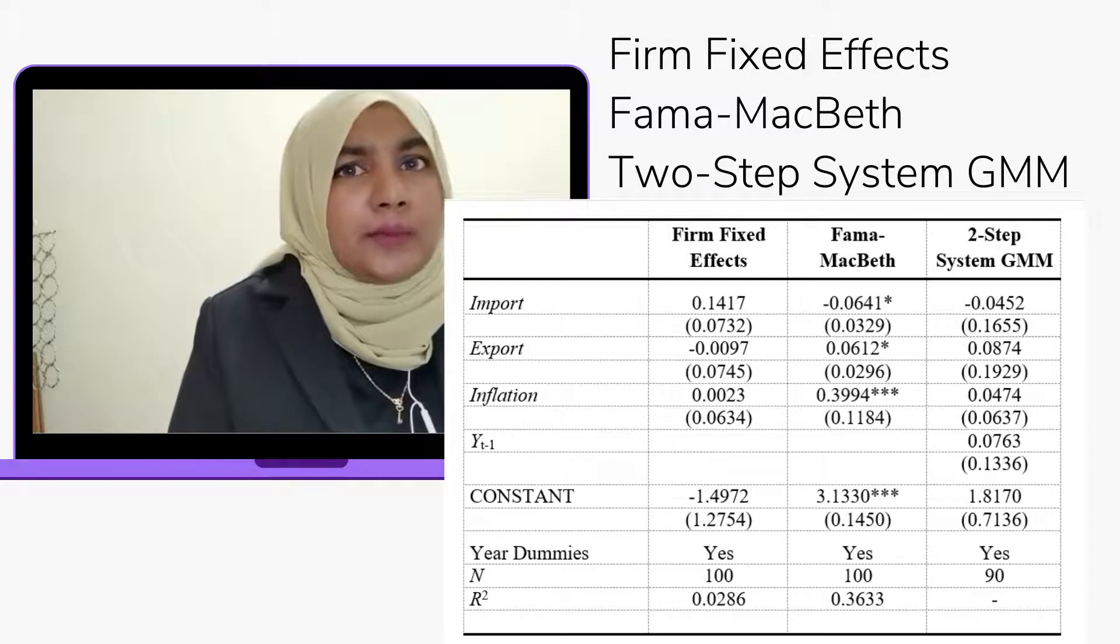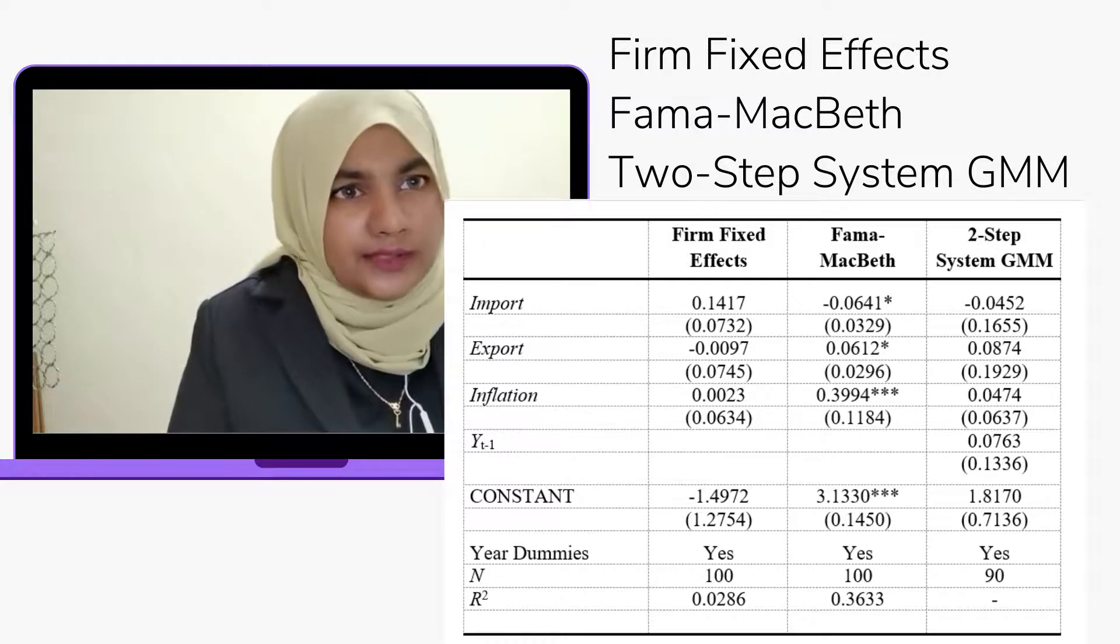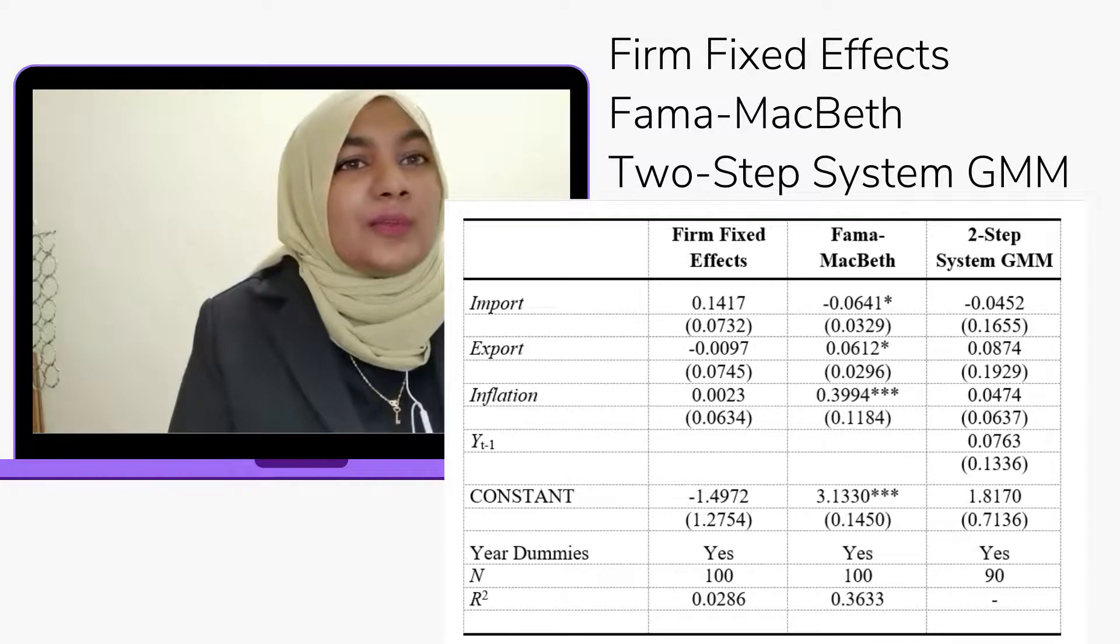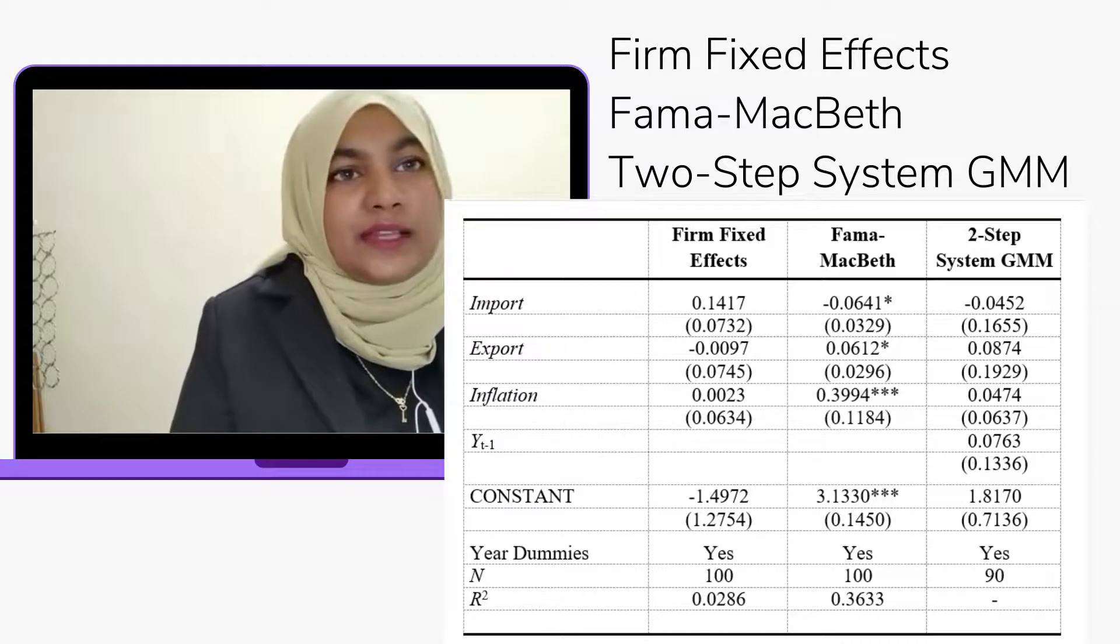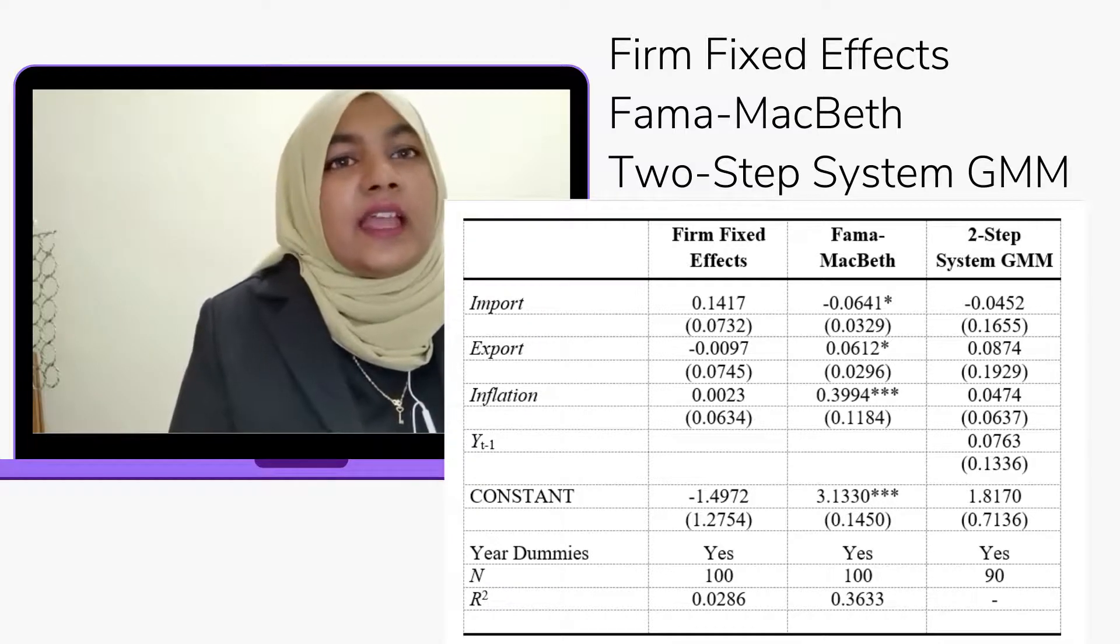For Fama-MacBeth, export and inflation show positive values, which is significant at 0.621 with standard error of 0.0296. For the Two-Step System test, the p-value is larger than 0.000, which tends to reject H0.